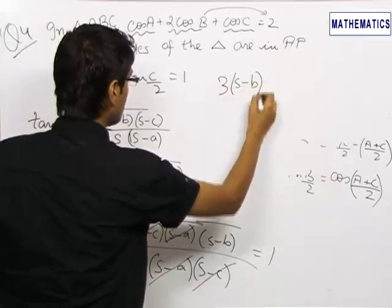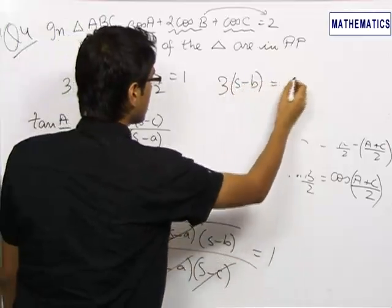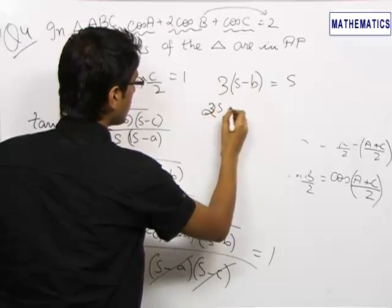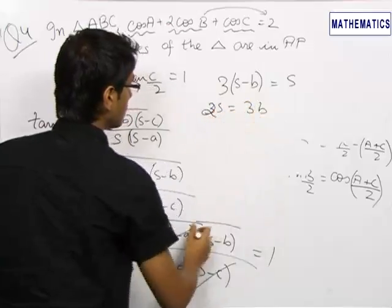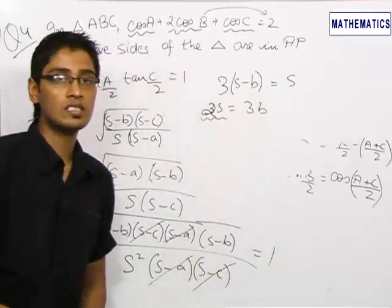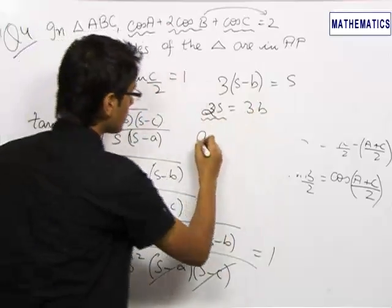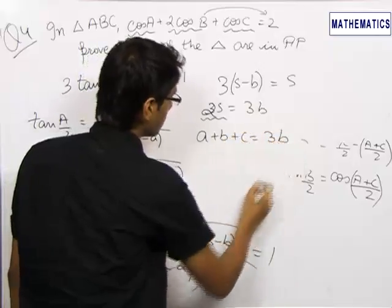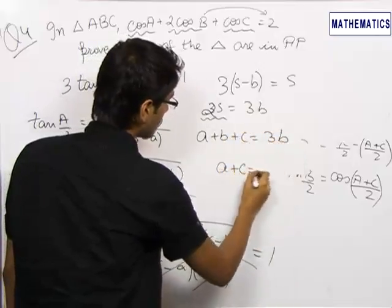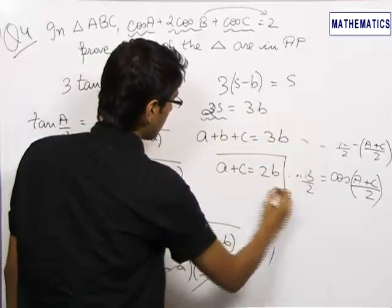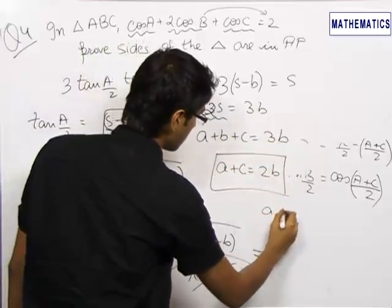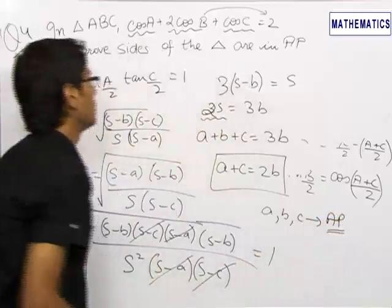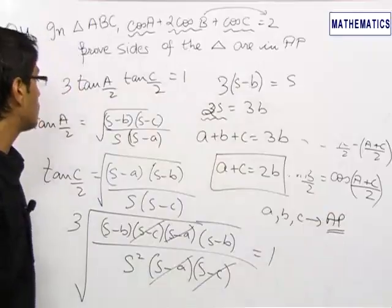So 3(s-b) = s gives us 2s = 3b. Since s = (a+b+c)/2, we have a+b+c = 3b, which simplifies to a+c = 2b.